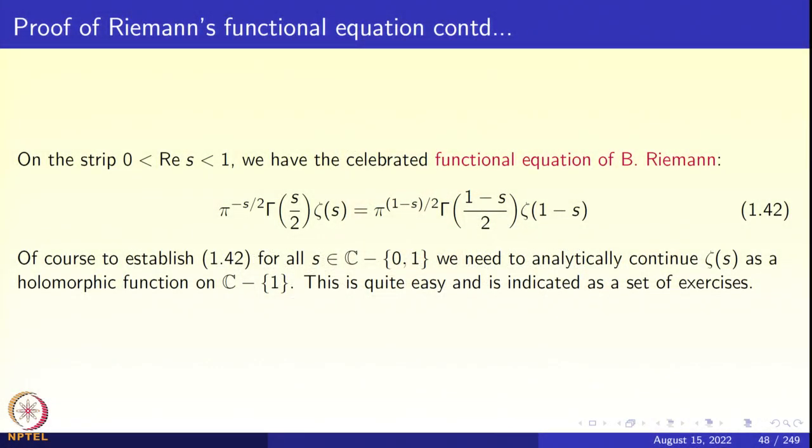We derived this in the strip 0 < Re(z) < 1. If we believe that the zeta function can be continued analytically throughout C minus {1}, then by the principle of analytic continuation, or the identity theorem, equation 1.42 will hold for all values of s in the plane minus {0, 1}. But we have not proved the analytic continuation on C minus {1}; we have only established it for Re(s) > 0.